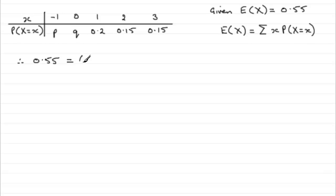minus 1 times p, plus 0 times q, I know that's 0, but I'm just going to purposely put that in just for the sake of it, and then plus 1 times 0.2, and so on. So, we'll just finish this off, 2 times 0.15 plus 3 times 0.15.